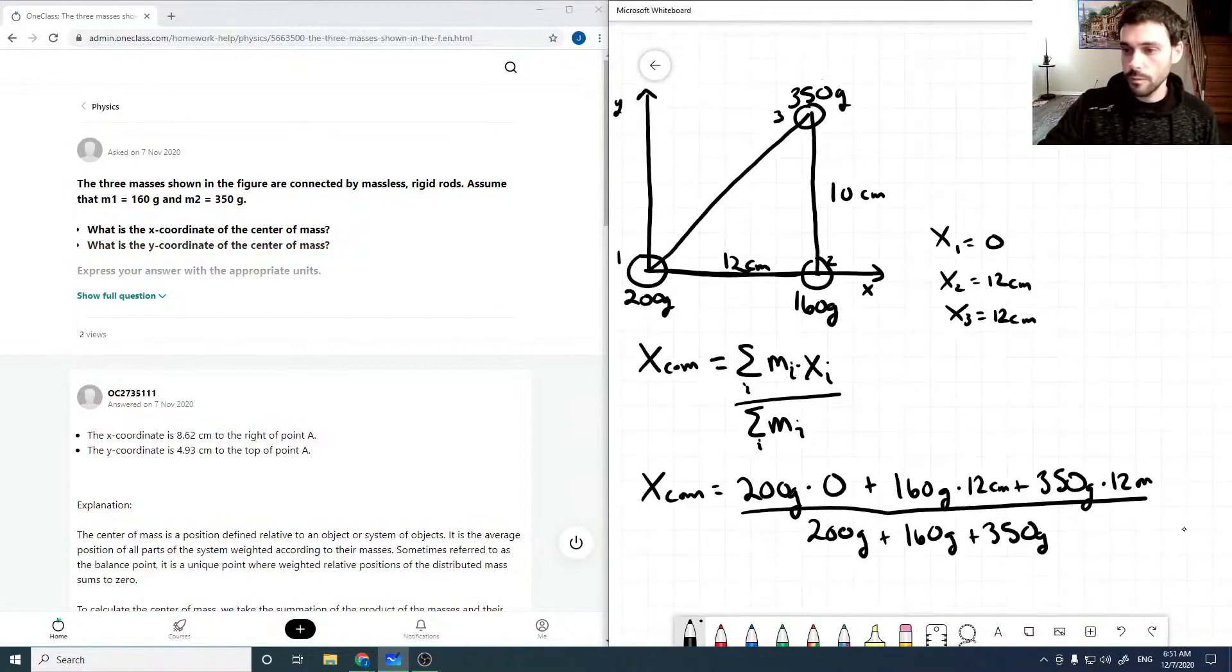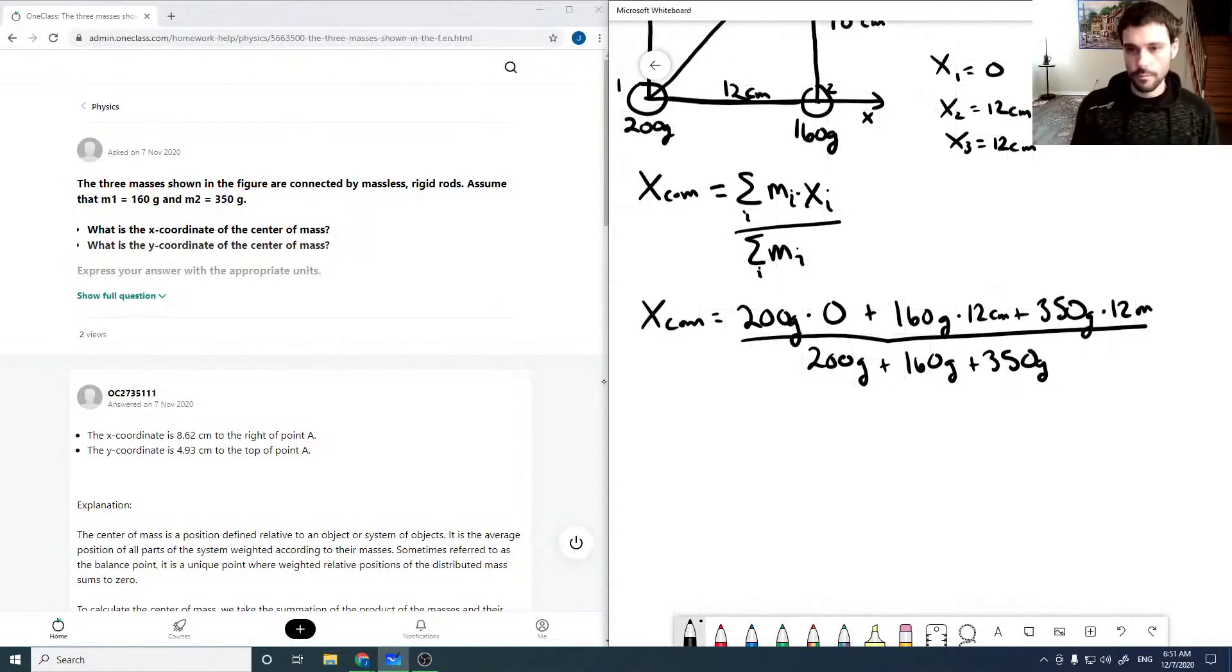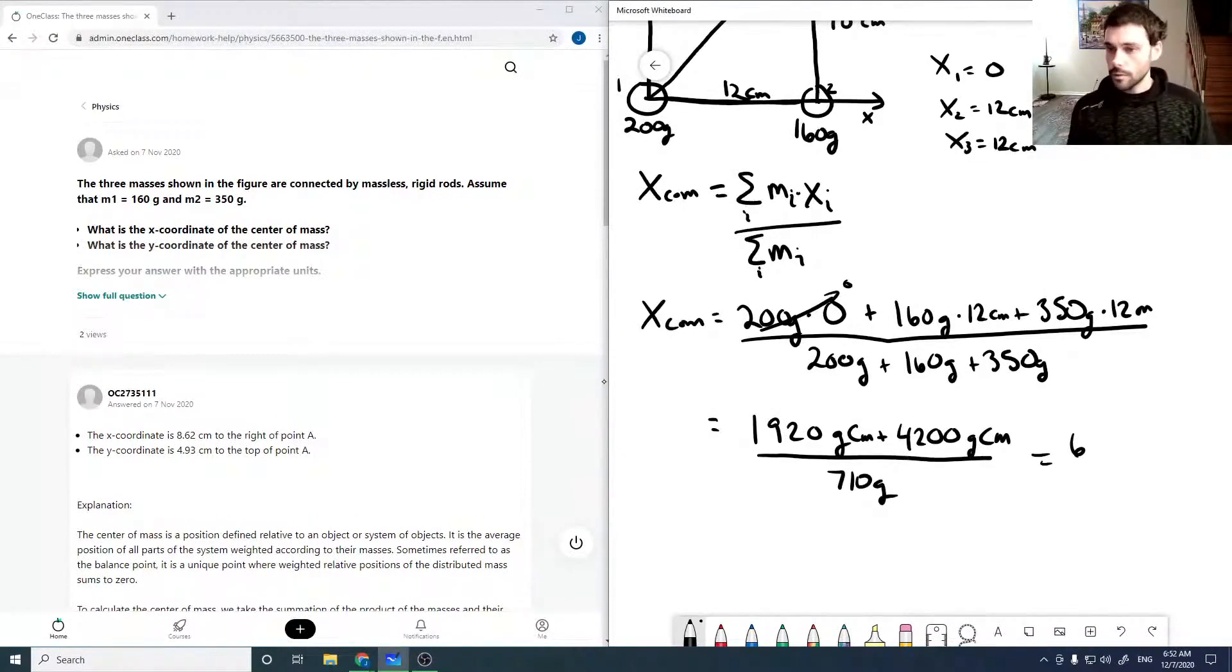So this is just zero, and so this is 1920 gram centimeters plus 4200, all divided by 710 grams, which is 6120 gram centimeters. The grams are going to cancel, and so our x center of mass is just 8.62 centimeters.